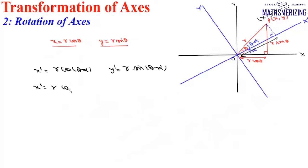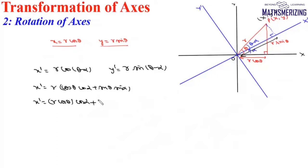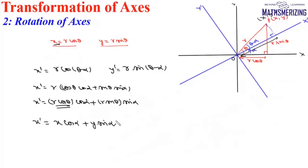Now, cos(A minus B) equals cos A cos B plus sin A sin B. So we can write X dash as R cos theta times cos alpha plus R sin theta times sin alpha. Since R cos theta is X and R sin theta is Y, we can simply write X dash as X cos alpha plus Y sin alpha.